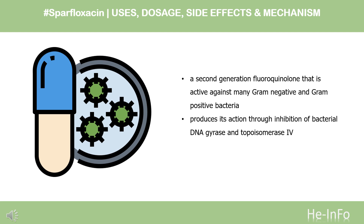Quinolones differ in chemical structure and mode of action from beta-lactam antibiotics. Quinolones may therefore be active against bacteria resistant to beta-lactam antibiotics. Although cross-resistance has been observed between sparfloxacin and other fluoroquinolones, some microorganisms resistant to other fluoroquinolones may be susceptible to sparfloxacin. Tests show that the combination of sparfloxacin and rifampin is antagonistic against Staphylococcus aureus.